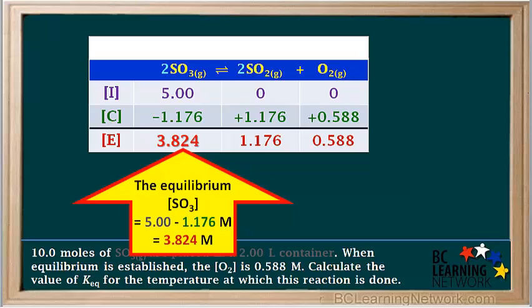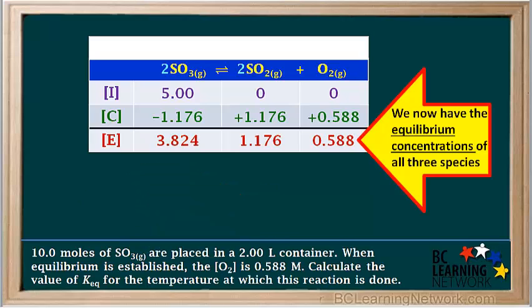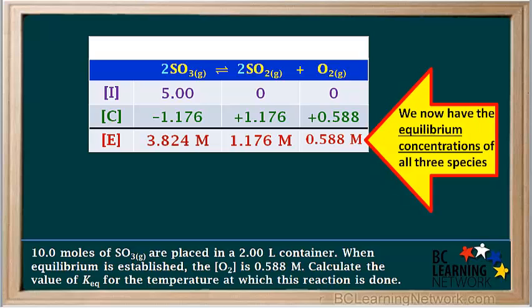We'd also like to point out that all equilibrium concentrations should be positive. There can be negative changes in concentration, but there's no such thing as a negative equilibrium concentration. If you get a negative value for an equilibrium concentration, a mistake must have been made somewhere. We have now determined the equilibrium concentrations of all species and recorded them in the E-row of the ICE table. Remember that all values in this table are concentration values and could also be written with the molarity unit M.